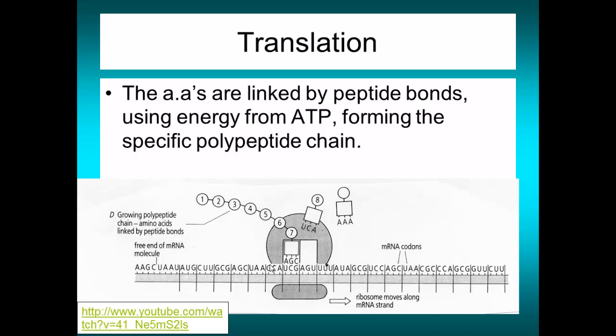The process continues — the ribosome shifts along one codon at a time, a tRNA comes into that slot bringing its amino acid — until we reach a stop codon. Once it reaches a stop codon, translation comes to a stop. There is a reference here to another YouTube video, about four minutes long and well worth watching.